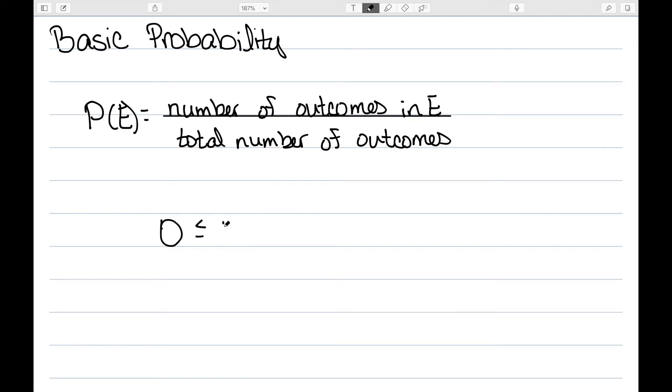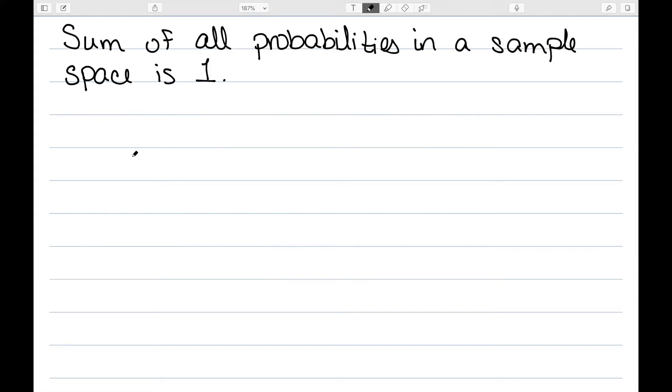One thing to note is that this probability is always going to be between zero and one. It can include zero and one, but it will always be between zero and one. Another big property: the sum of all the probabilities in a sample space is one.